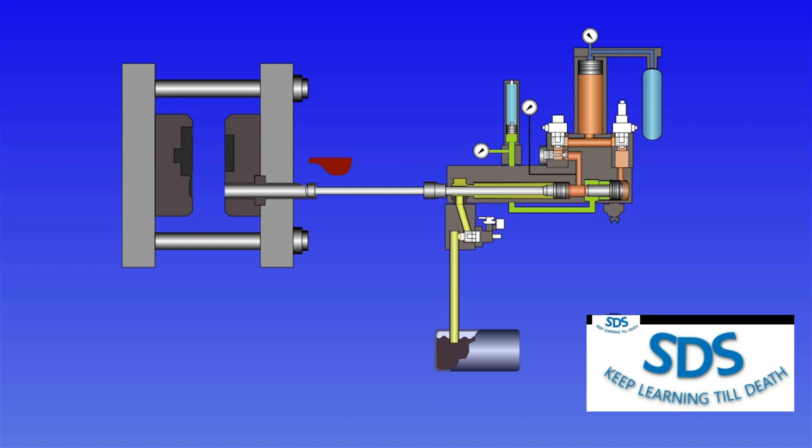Therefore, if we pre-charge the biconstant accumulator with 160 bar max, the result will be minimum intensification. Conversely, if the biconstant is charged at 20 bar minimum, the machine will produce the maximum intensification pressure.